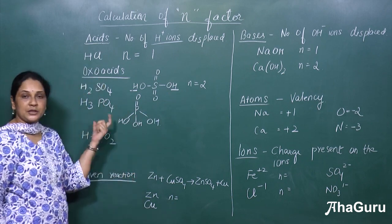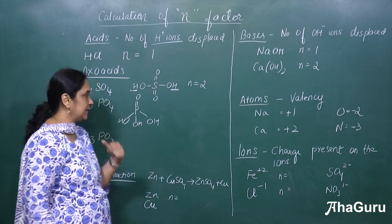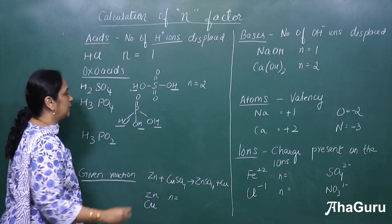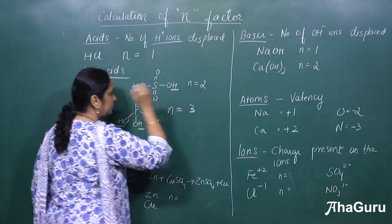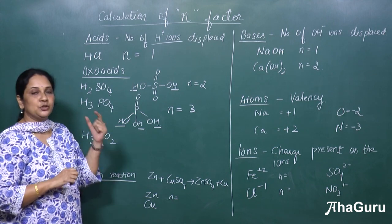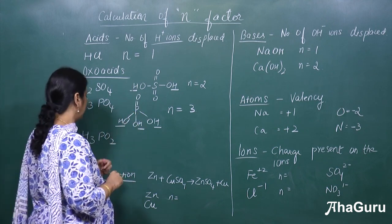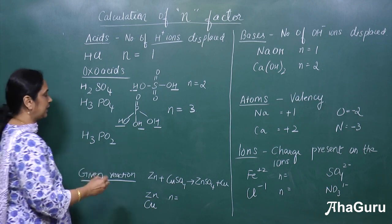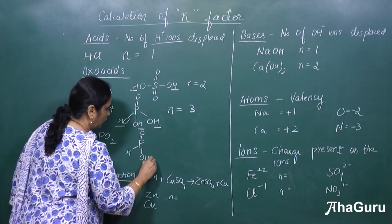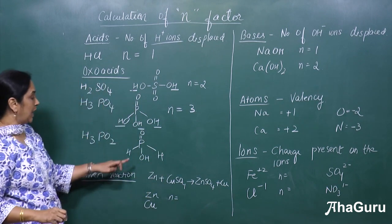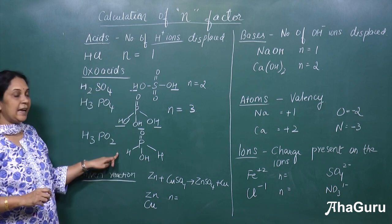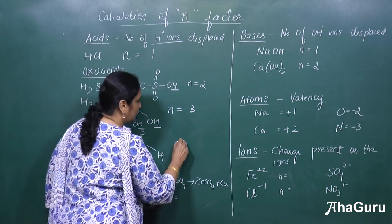For phosphoric acid H₃PO₄, the hydrogens attached to oxygen are 3, so the N factor is 3. For H₃PO₂, the structure is P double bond O, with one OH and one H directly on P. The hydrogen attached to oxygen is only 1, so the N factor for H₃PO₂ is equal to 1.